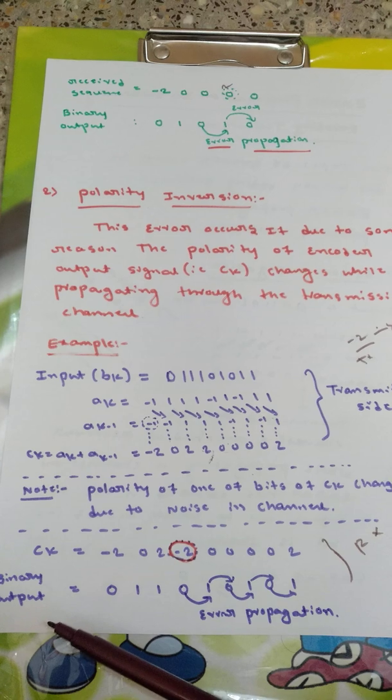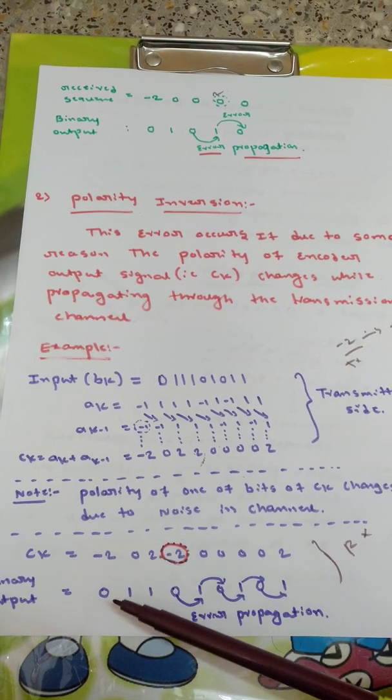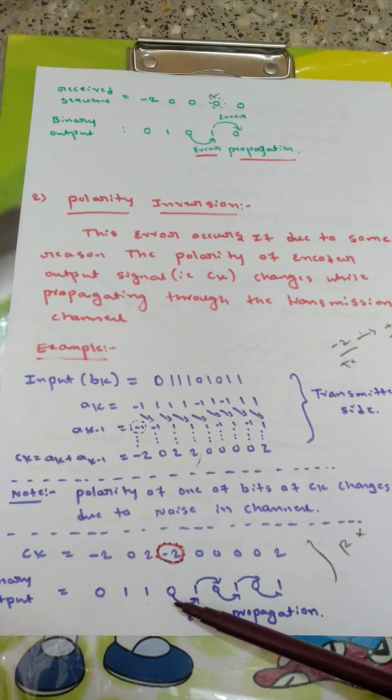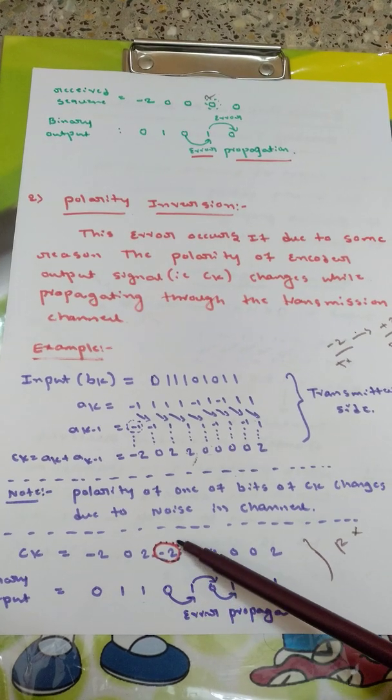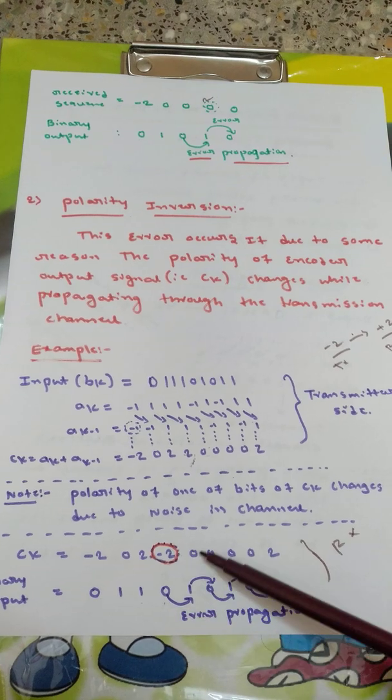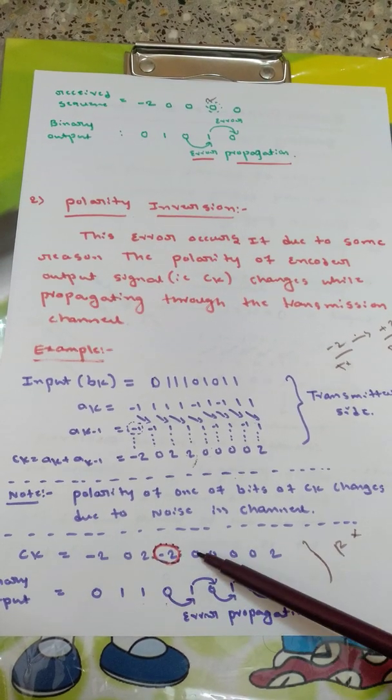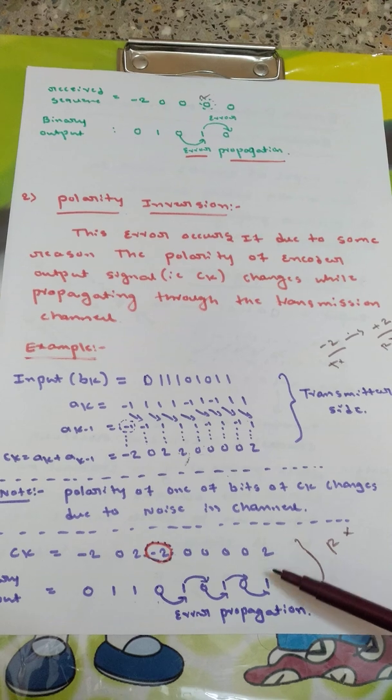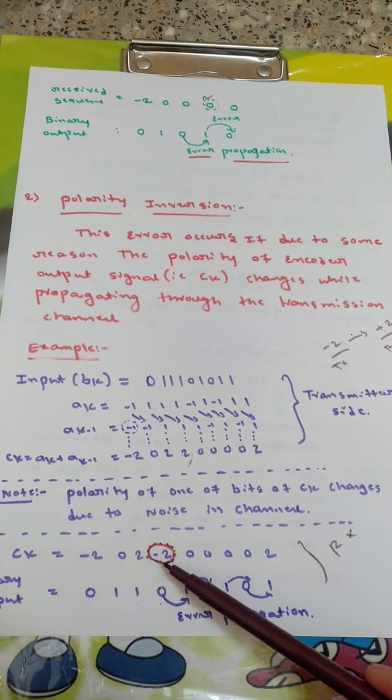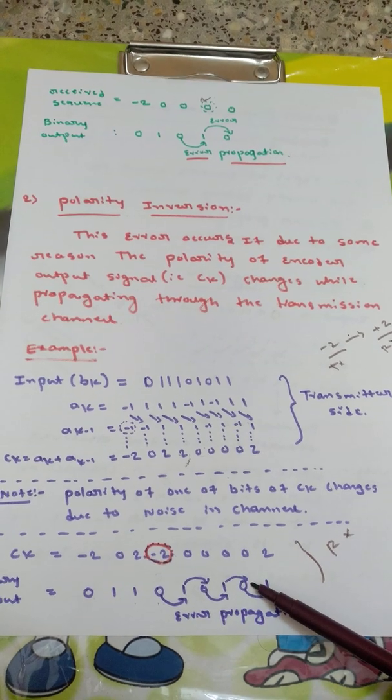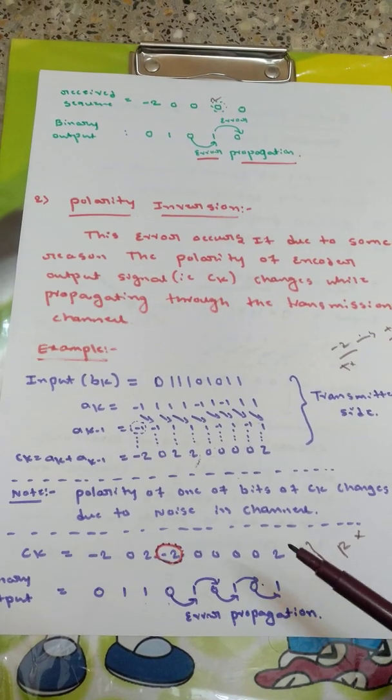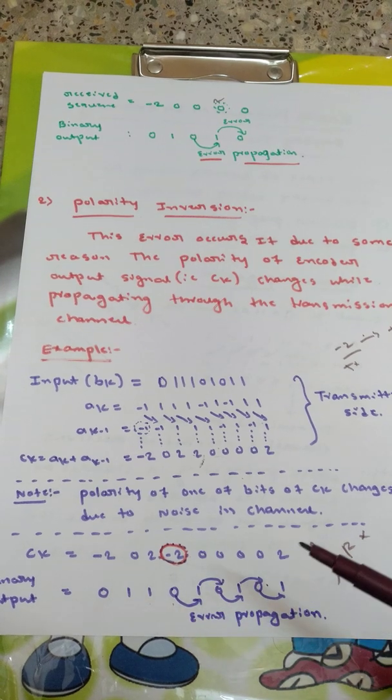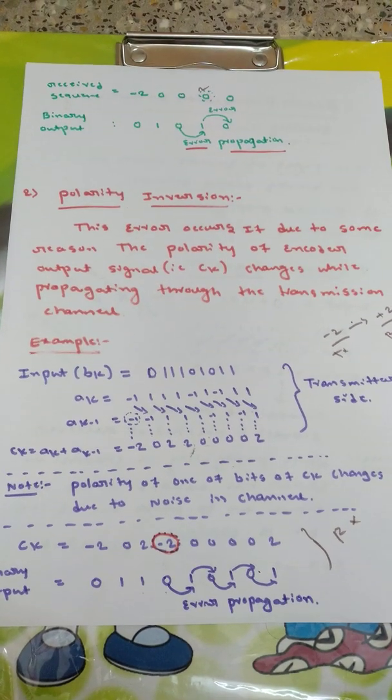So when you decode this signal, binary output will be minus 2 will be 0, 0 will be complement of previous one so 1, 2 will be directly we can write 1, and minus 2 will be directly we will be writing as 0. This supposed to be plus 2. If it is plus 2 then it could have been 1. And due to this the output, other outputs are dependent. 0 is complement of this one, 0 is complement of this one, 0 is complement of this, 0 is complement of this, 2 is directly we can write 1. So the error is occurred here and it is propagated until this bit. So this is how polarity inversion introduces the error. And due to the property it will be propagating to the output. So I hope you understood about polarity inversion.